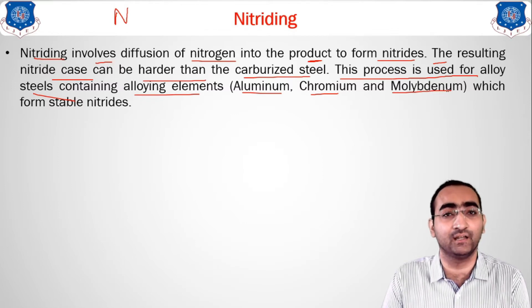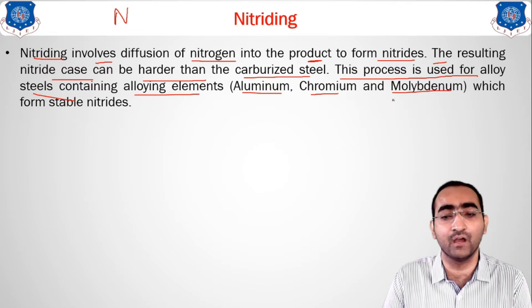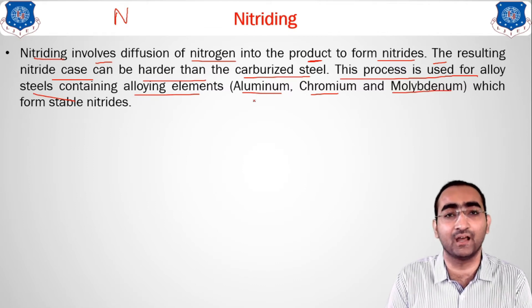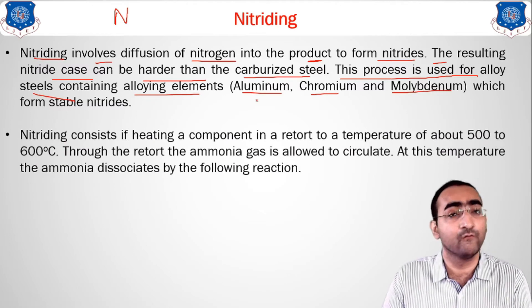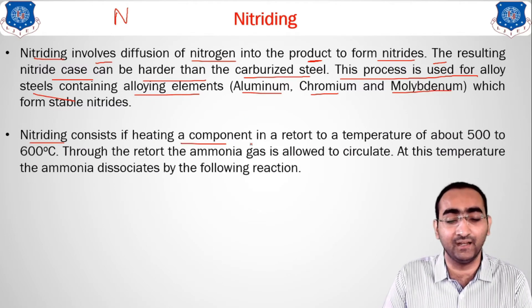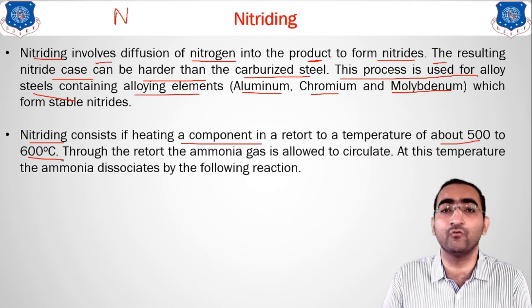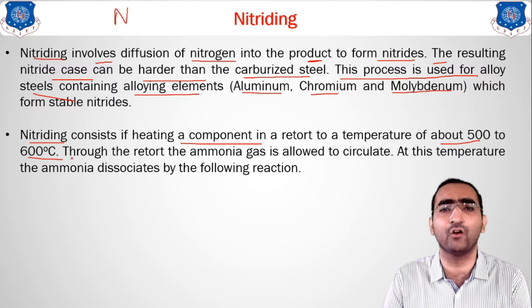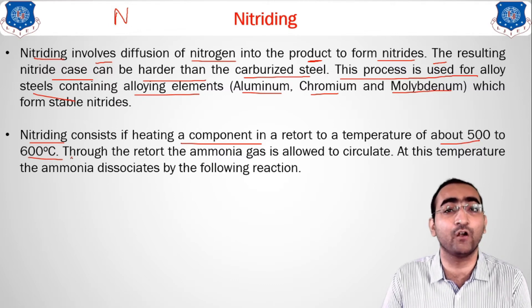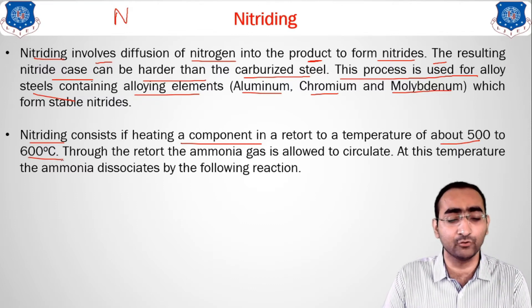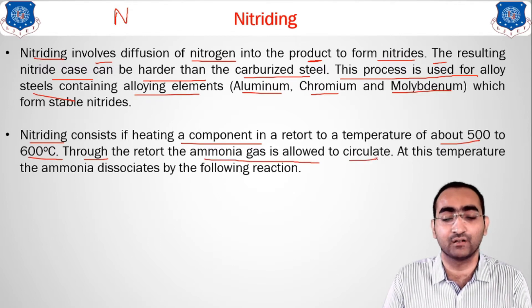Only steels containing aluminium, chromium, and molybdenum are suitable for the nitriding method. In nitriding, the component is heated to about 500–600°C. We do not need to go up to 900°C (the austenitic range), so the temperature is lower, the time taken is less, and the energy involved is less compared to bulk hardening methods. Ammonia gas (NH₃) is allowed to circulate through a retort.